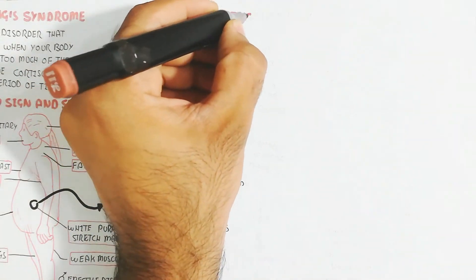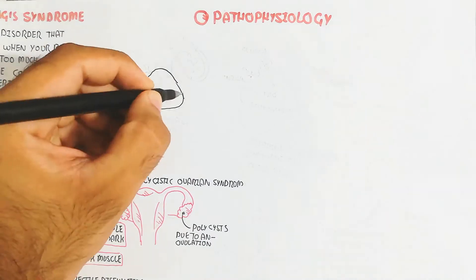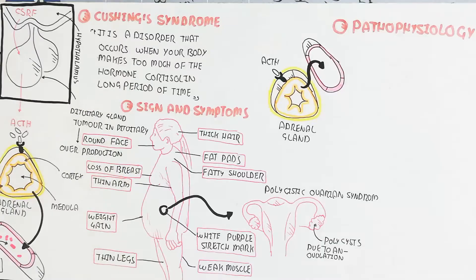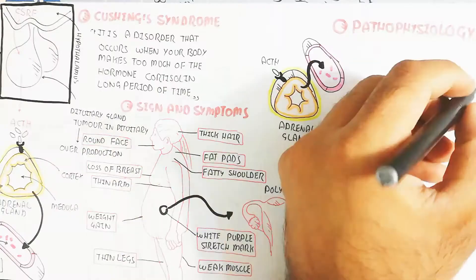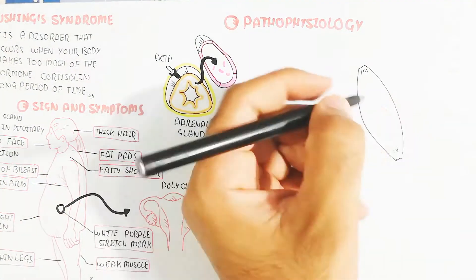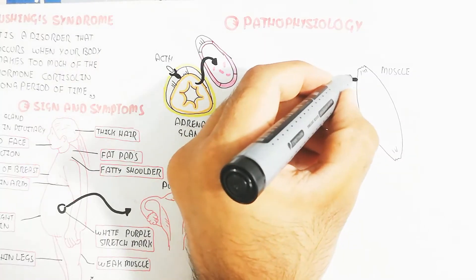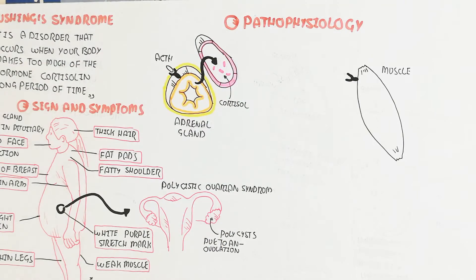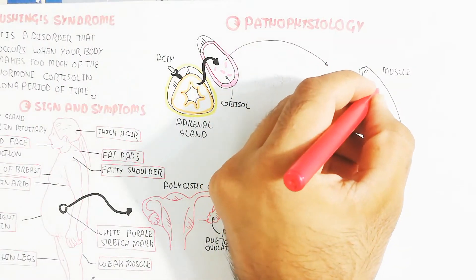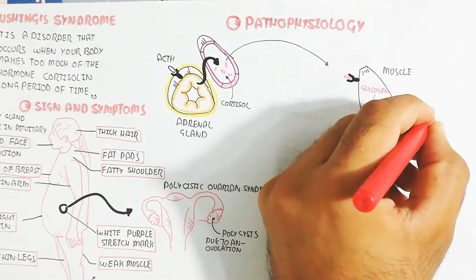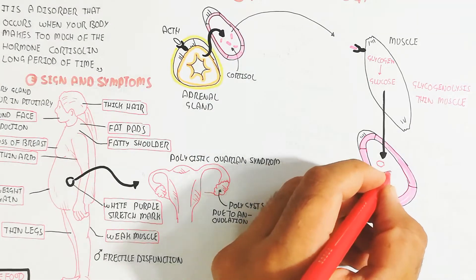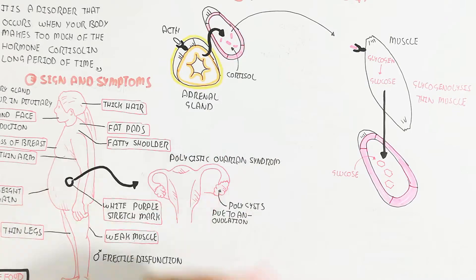Now let's understand the pathophysiology — what is the problem and how the physiology changes. The adrenal gland receives adrenocorticotropic hormone, which binds with the adrenal cortex to release cortisol into the blood circulatory system. The increased cortisol targets muscle tissue; upon binding, it leads to glycogen depletion through glycogenolysis, producing glucose that enters the blood circulatory system, causing hyperglycemia.